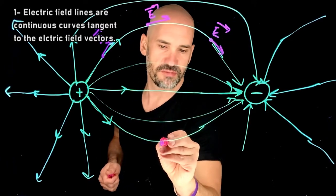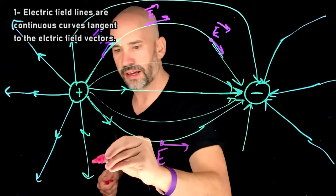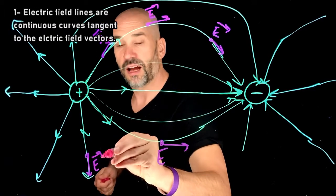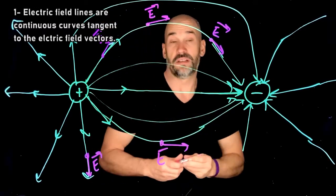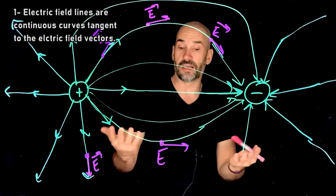Makes sense, it's not too tough. E would be this way, here, E would be this way. Electric field at any given point is tangent to the electric field line. Okay?